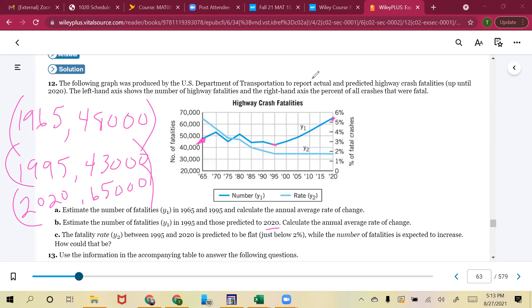So average rate of change. So for part A, I'm going to do 43,000 and I'm going to subtract from that 48,000, because that's going to give me my change in the number of fatalities. And I'm going to divide that by my year. So I'm going to do 1995 minus 1965. And if you work this out, you are going to get, I think it ends up being negative 5,000 over 30. If you divide that out, it's going to be negative 166.7 car fatalities per year.